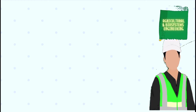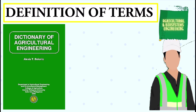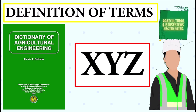Welcome to my channel. This time, we will be having a definition of terms related to agricultural engineering. The list of terms came from Dr. Alexis Belonio's Dictionary of Agricultural Engineering. The terms I will be showing to you are words that start from letter X, Y, and Z.